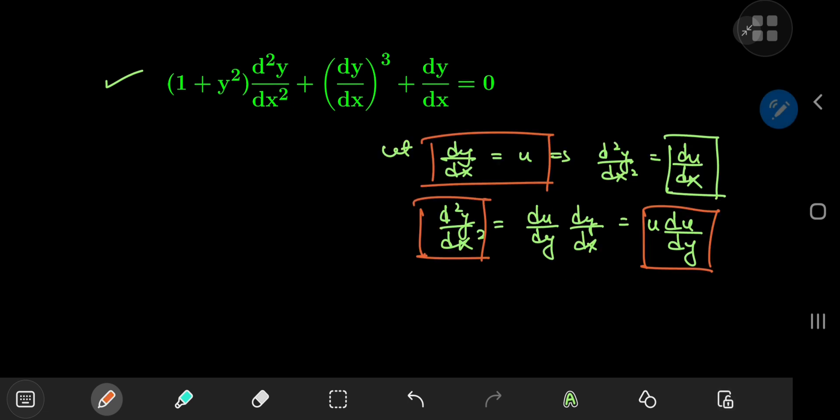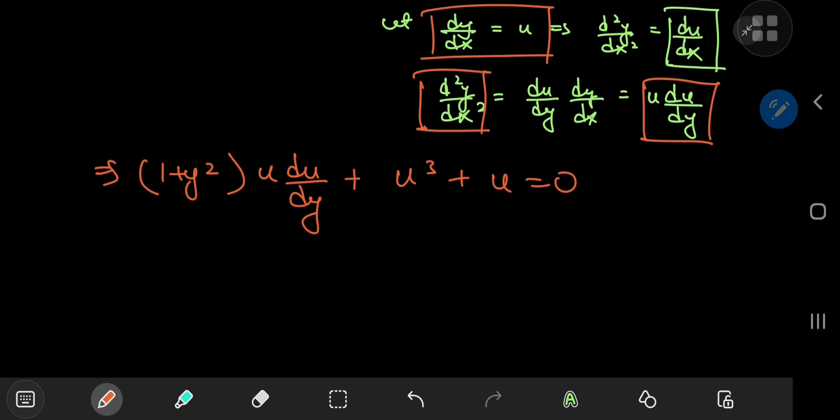Now that I've mapped out the derivatives in the u world, I can transform the given differential equation. So this implies that we have (1 + y²) times u times du by dy plus the cube of the first derivative of y, which is of course u³ plus u, and this equals 0.